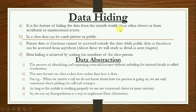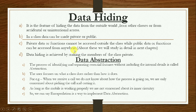Data members of the class can only be accessed by the functions of that class, not directly. Data hiding, as the name suggests, is the feature of hiding data from the outside world or from other classes, to prevent accidental or unintentional access. For this purpose, data can be made private or public. Private data members or functions cannot be accessed outside the class, while public data or functions can be accessed from anywhere.